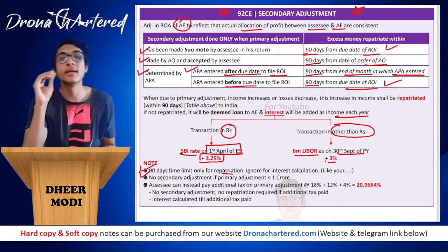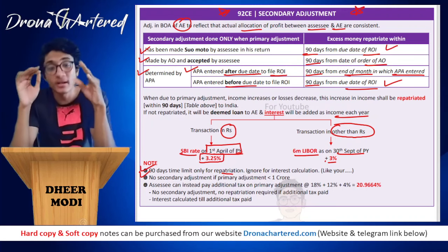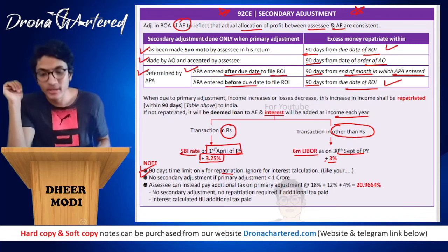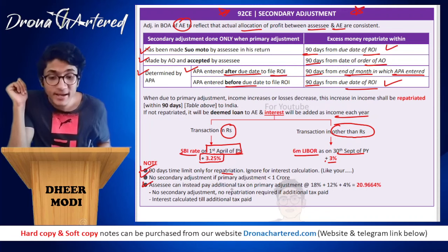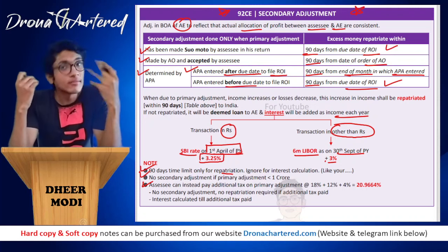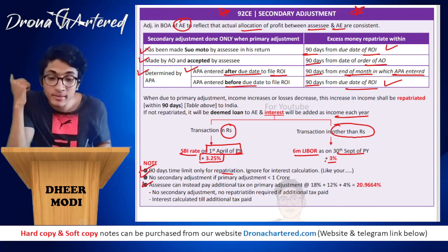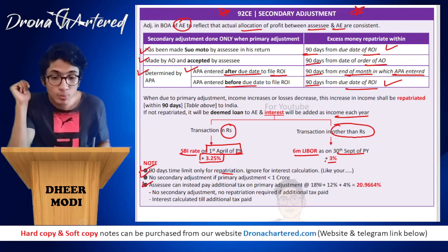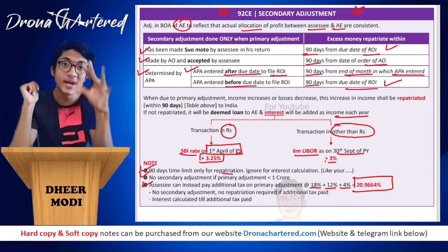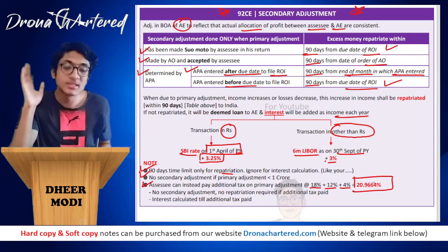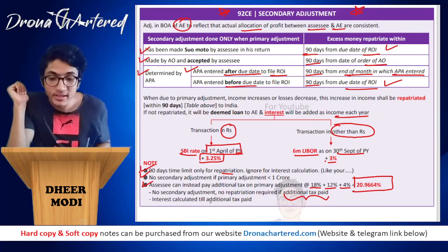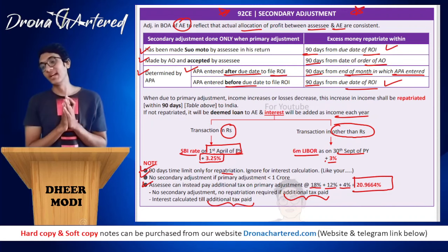No secondary adjustment is required if the primary adjustment is less than 1 crore. As an exit option, the assessee can instead pay additional tax on the primary adjustment amount at 18% plus 12% surcharge plus 4% health and education cess, totalling 20.964%. On payment of this tax, no secondary adjustment and no repatriation is required. Interest is calculated only up to the date the additional tax is paid. This concludes the chapter on transfer pricing.